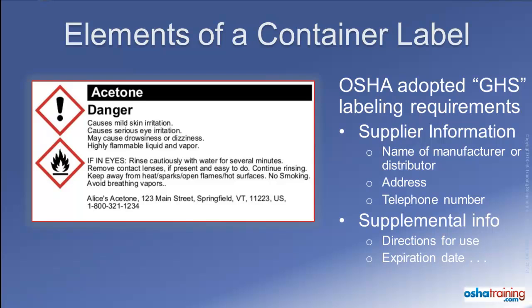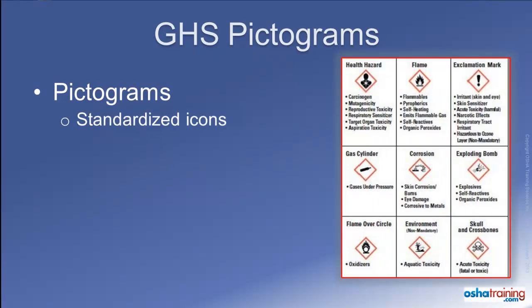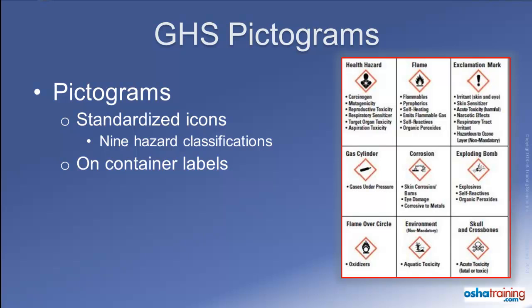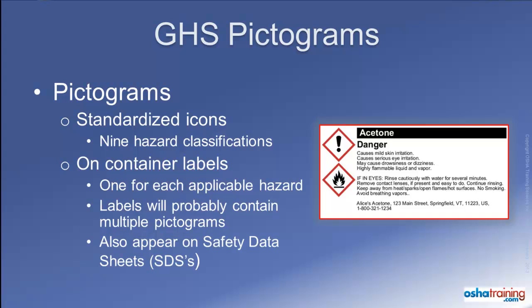A key new requirement of the GHS labeling system, and something fairly new in the United States, are pictograms. Pictograms are standardized icons that alert workers to the various hazards of a product. There are nine different pictograms used in the GHS labeling system, each depicting a different health or safety hazard applicable to the particular product. Some labels may have only one pictogram, but most will display multiple. Pictograms appearing on a product label can also be found on the Safety Data Sheet, where you can get even more detailed information about hazards and recommended precautions.